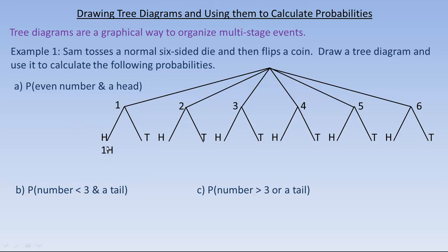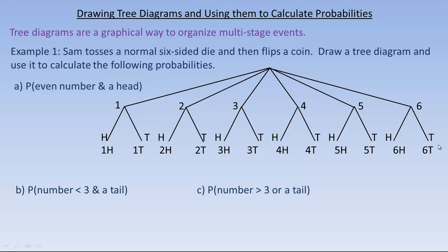So that's the event that he got a one and a head, and this one would be he got a one on the die and then a tail. Over here would be the event that he got a two and a head, and then a two and a tail, and so on throughout the entire diagram. This is actually called the sample space — it lists every possible outcome that you could get. And there are twelve of them.